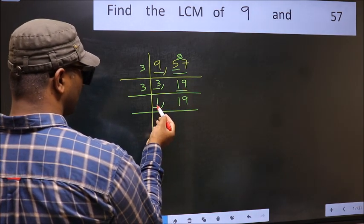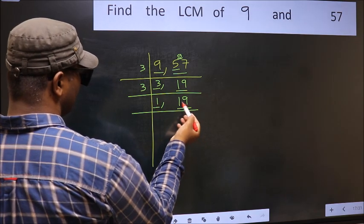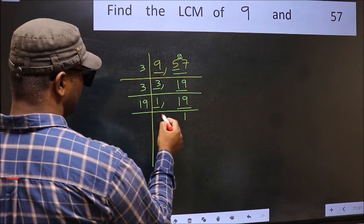Now we got 1 here, so focus on the next number, 19. 19 is a prime number, so 19 times 1 is 19.